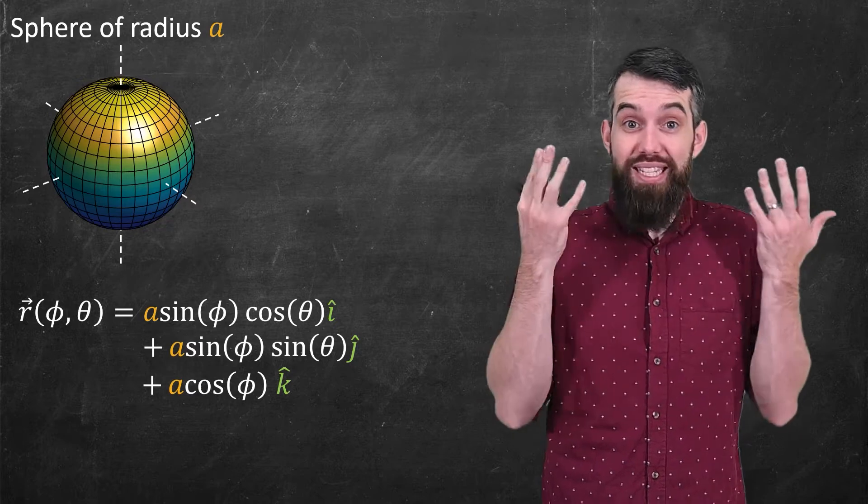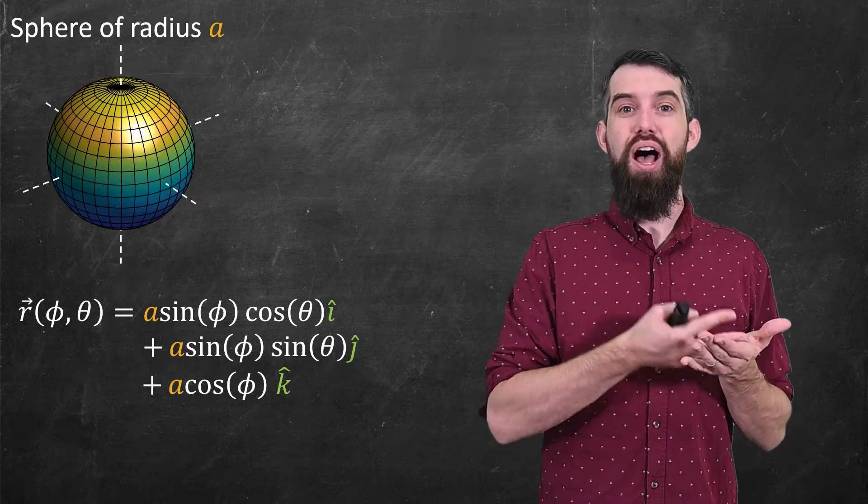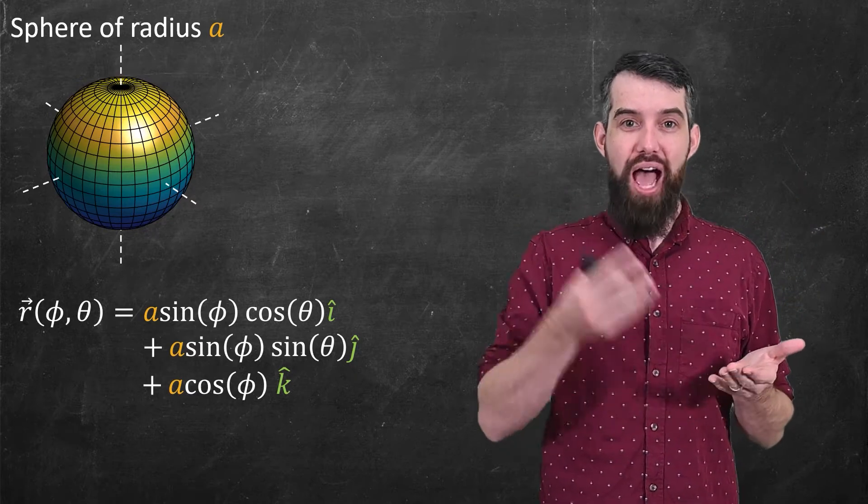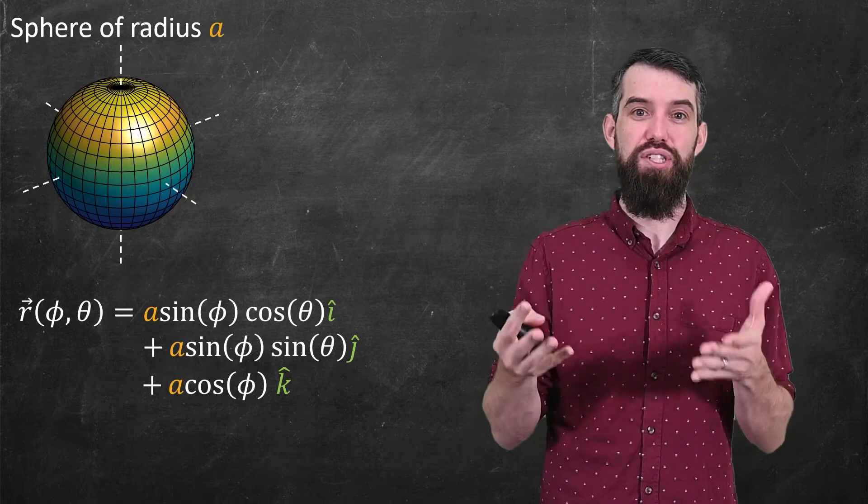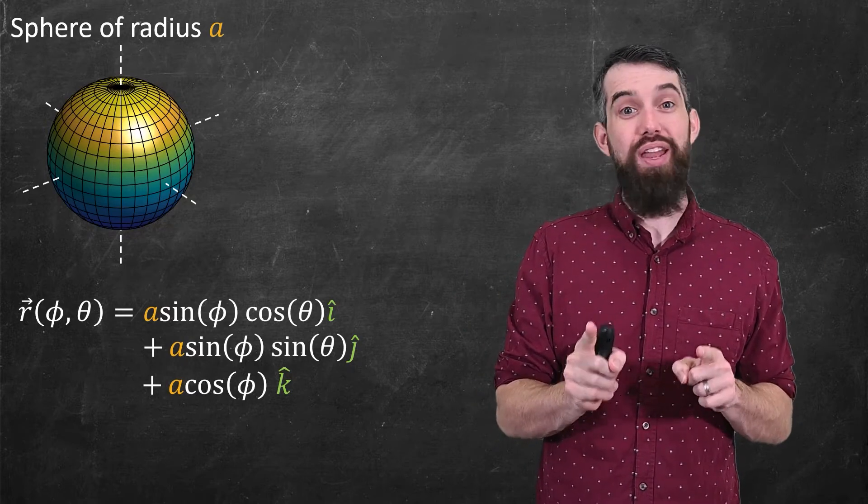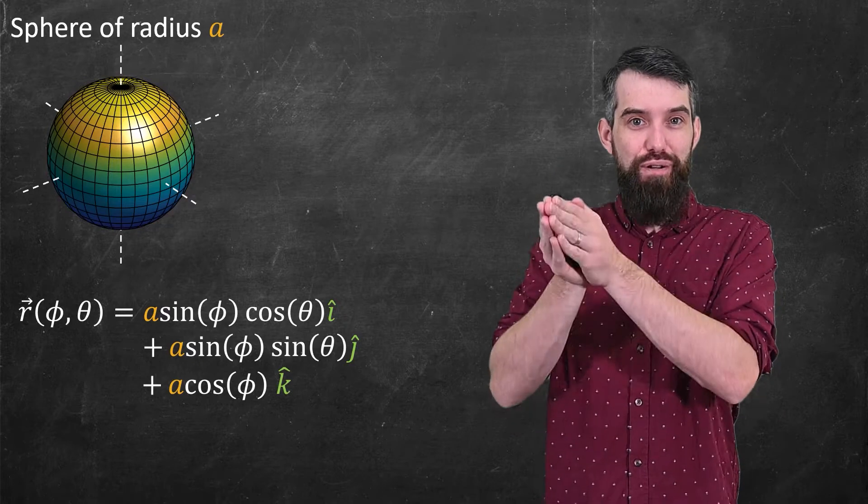So writing down my parametrization, it's exactly what we just said. r(φ,θ) is going to have an î, a ĵ, and a k̂, and each of these are the three things we just saw. I do want to note here though that a is a fixed value, it's the radius of this sphere. So a is not a parameter, it's not varying as you move around.